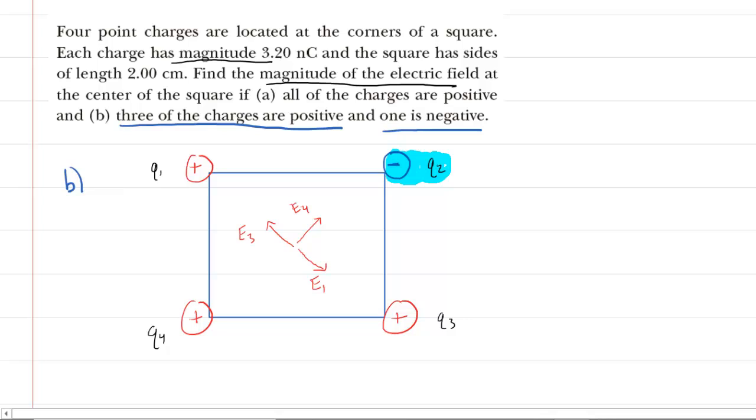Now what we've done is we have kept the electric fields E1, E3, and E4 the same because those three charges, Q1, Q3, and Q4 are the same. The only change was to Q2. So let's figure out the direction of the electric field now from Q2.